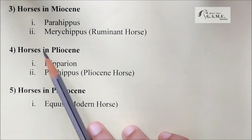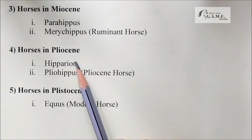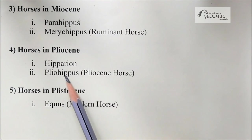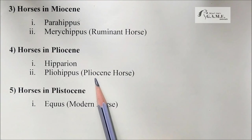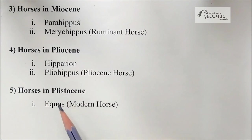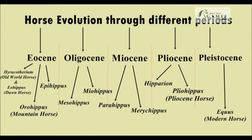Moving forward, in the Miocene we have Parahippus and Merychippus, also called the ruminant horse. In the Pliocene we have Hipparion and Pliohippus, also known as the Pliocene horse. In the Pleistocene we have one and only Equus. This is the flow chart telling us about the evolution of horse through different periods.